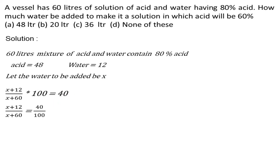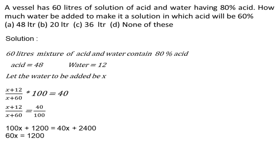We can simplify: 40 upon 100. Cross multiplication gives 100x + 1200 = 40x + 2400. So 60x = 2400 − 1200 = 1200. Therefore x = 20 liters.